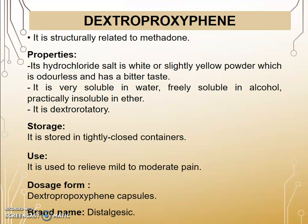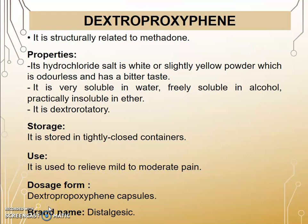The next drug is Dextropropoxyphene, which is structurally related to Methadone. Its hydrochloride salt is a white or slightly yellowish powder, odorless with a bitter taste. Solubility: it is very soluble in water, freely soluble in alcohol, and practically insoluble in ether. It is dextrorotatory. Storage: stored in a tightly closed container. Uses: to relieve mild to moderate pain. Dosage form: Dextropropoxyphene capsule. Brand name: Distalgesic.